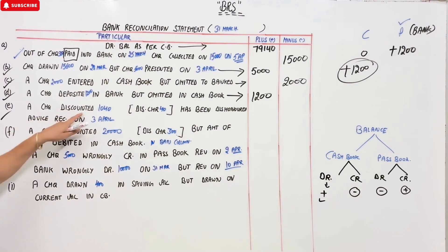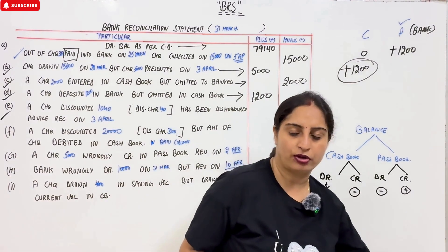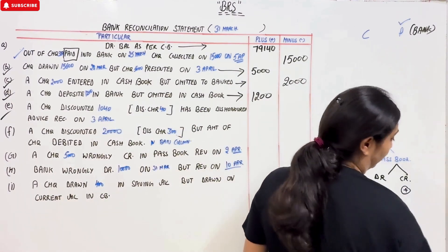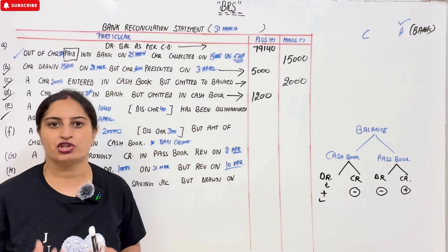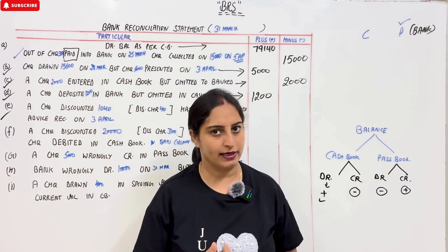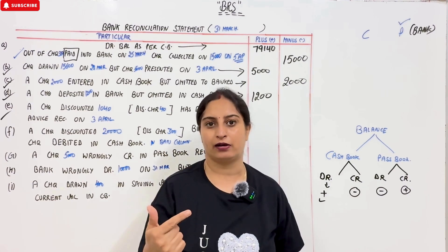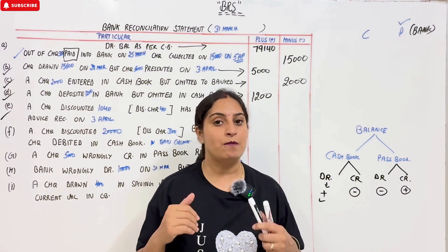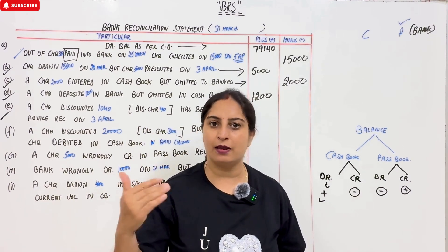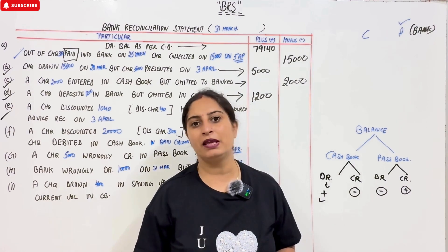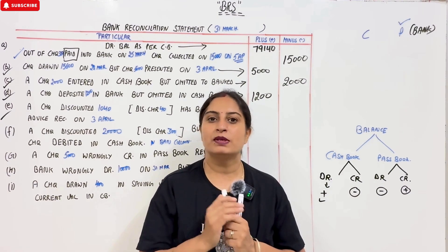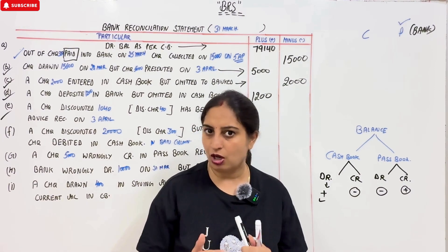Entry E: a cheque discounted. First of all, this topic — discounting — is from the Bill of Exchange chapter which has been removed from your syllabus now. Sometimes we receive a cheque from someone that matures in 10 or 20 days — payable next month. But if we need money today, the bank gives us a facility to discount it. If you have a cheque of Rs. 10,000, the bank cuts a discount of say Rs. 1,000, and gives you Rs. 9,000 today. After a month, the party comes to the bank and pays Rs. 10,000.